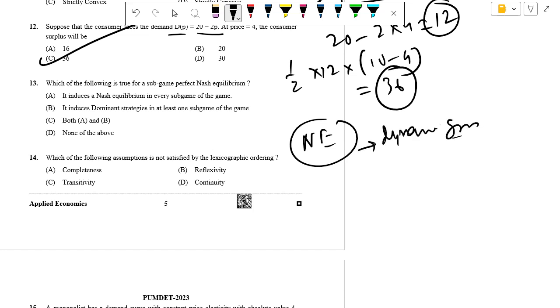It requires that the strategies be a Nash equilibrium not only overall, but also at every possible point in the game. This is very crucial - it includes a Nash equilibrium in every sub-game.